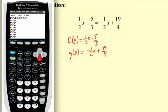Down arrow to y2. Negative 1 half x or negative 0.5. Then times x plus 19 fourths.